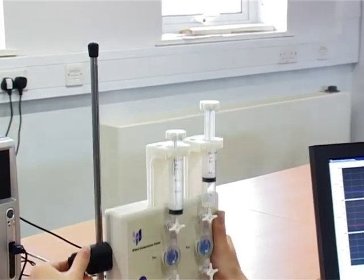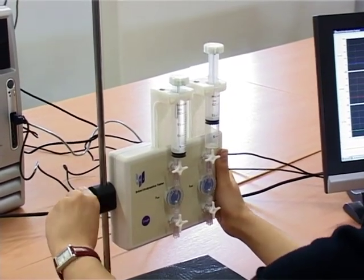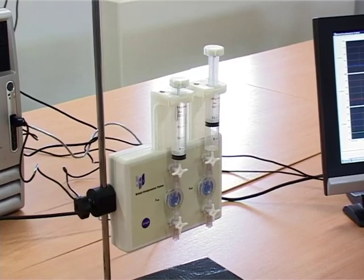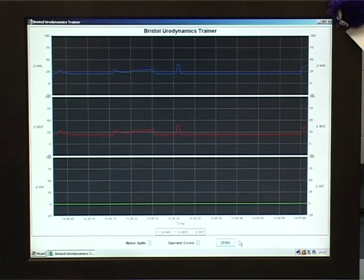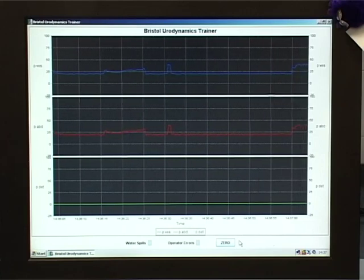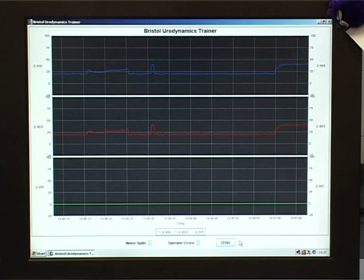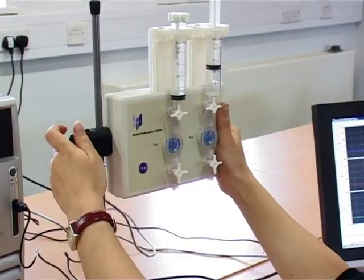Another feature of good urodynamic practice that can be simulated is the setting of reference level. While moving the trainer vertically, the displayed pressure changes due to the relative positions of transducer and patient. Good urodynamics practice is to set this level to the upper edge of the symphysis pubis.